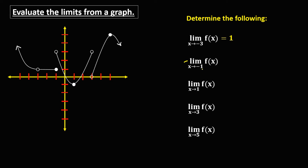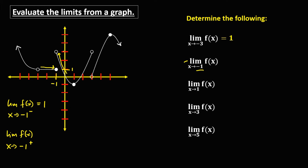Then for this limit — f of x as x approaches negative 1. This is x = negative 1. To find the limit of f of x as x approaches negative 1 from the left, and also the limit of f of x as x approaches negative 1 from the right. As x approaches negative 1 from the left, the limit is positive 3. Then as x approaches negative 1 from the right, the limit is positive 3.